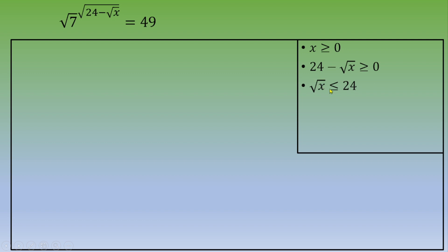If you square both sides, you get x ≤ 24² = 576. So to recap, x must be a number between 0 and 576.